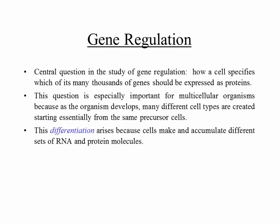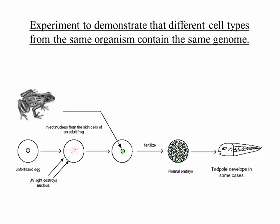The central question in gene regulation is how does the cell specify which of its many thousands of genes should be expressed as proteins. This is especially important for multicellular organisms because many different cell types are created from the same precursor cells. Each of us started from a single fertilized egg but have 100 trillion cells of many different types. Only red blood cells produce hemoglobin, and only beta cells in the pancreas produce insulin — even though every cell has the gene for both.